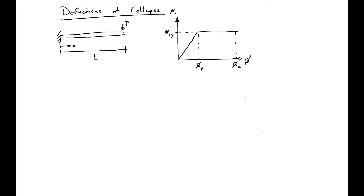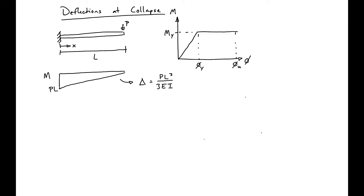We can find our elastic moment diagram where we have PL on the end, and from this we can find our elastic deformations: delta equals PL cubed over 3EI. What's going to happen after we reach yielding — after PL reaches MY — is we're going to have yielding and we're going to get some rotation at the end.